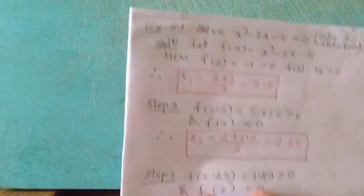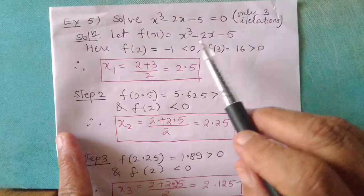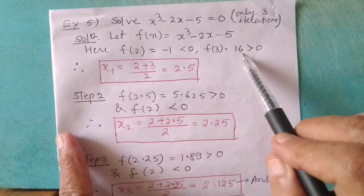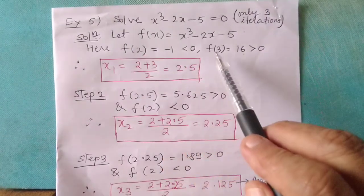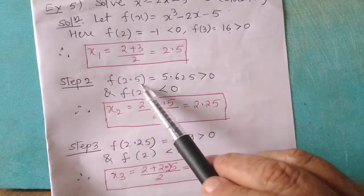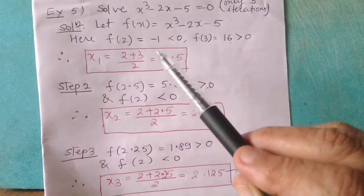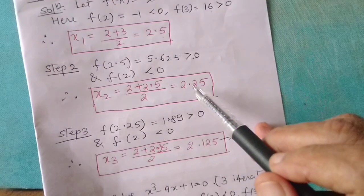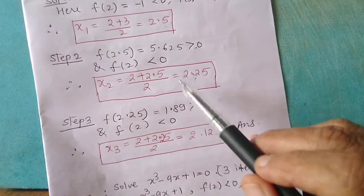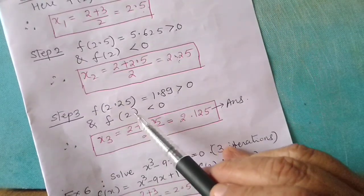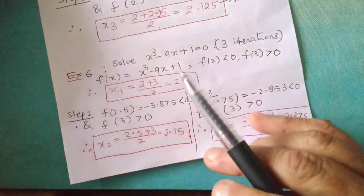Next example: solve x cube minus 2x minus 5 equals 0 with three iterations. f of 2 is negative and f of 3 is positive. This is your first iteration. The midpoint of 2 and 3 is 2.5. f of 2.5 is positive. f of 2 is negative. The midpoint of 2 and 2.5 is 2.25, the second iteration. f of 2.25 is positive, f of 2 is negative. The midpoint of 2 and 2.25 is 2.125.